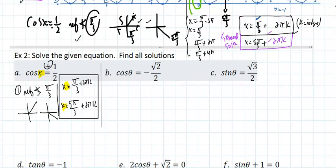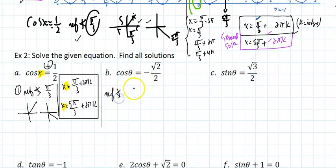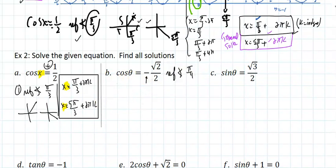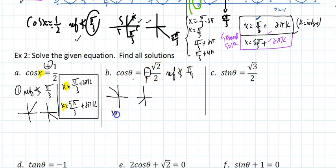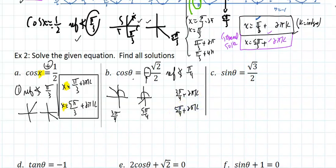Now, cos θ = −√2/2. First find the reference angle — ignore the plus or minus. The reference angle is π/4. Where is cosine negative? Cosine is negative in quadrant 2 and quadrant 3. In quadrant 2, π/4 gives 3π/4; in quadrant 3 it gives 5π/4. So the answer is 3π/4 + 2πk and 5π/4 + 2πk, where k is all the integers. Sine and cosine have a period of 2π, and the angle comes in at the last step.